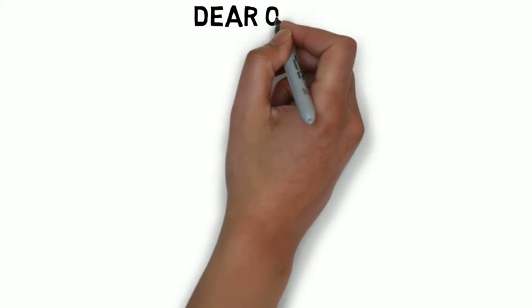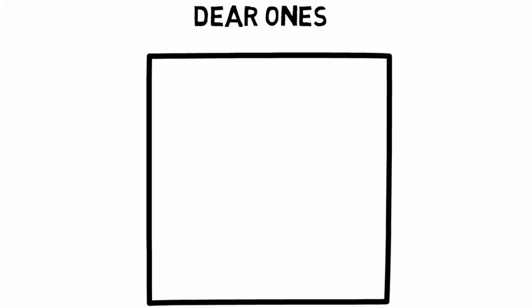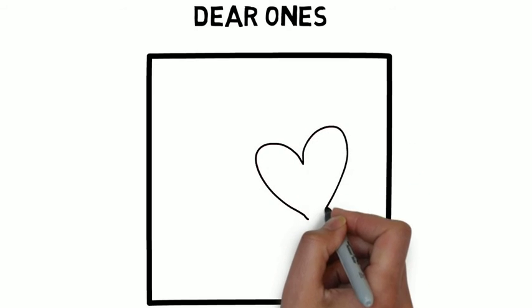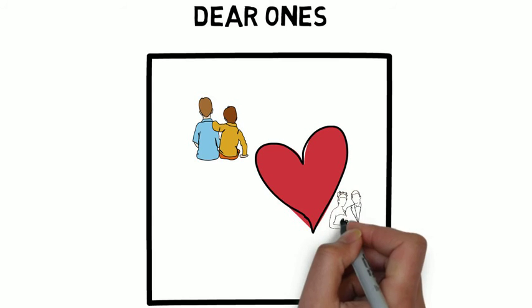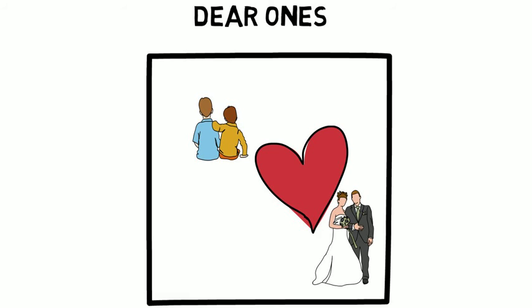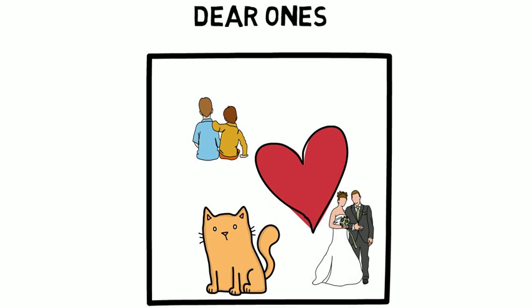Third great small talk topic: dear ones — that is, people that we really, really love. Say we're talking to Sarah, and Sarah has two boys. We could say, 'Sarah, how are your two boys doing? Are they well?' Or equally, if Sarah has a husband: 'Sarah, how's your husband doing? Is he okay?' And finally, if they've got a pet, say a cat, we could say, 'Sarah, how is your cat Mr. Pickles? Is he doing well?'